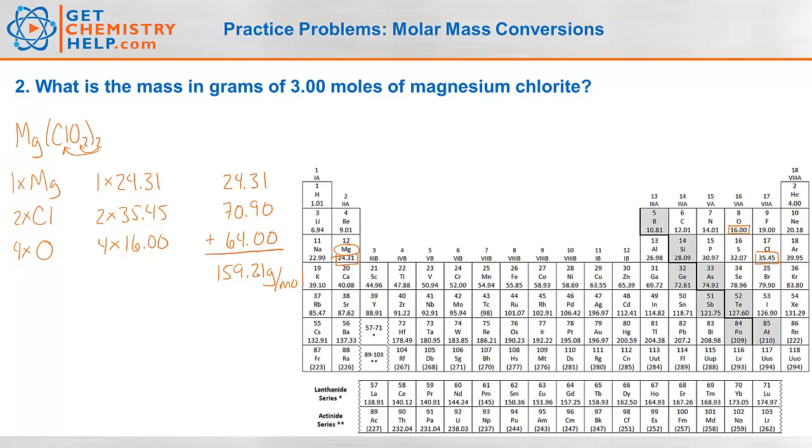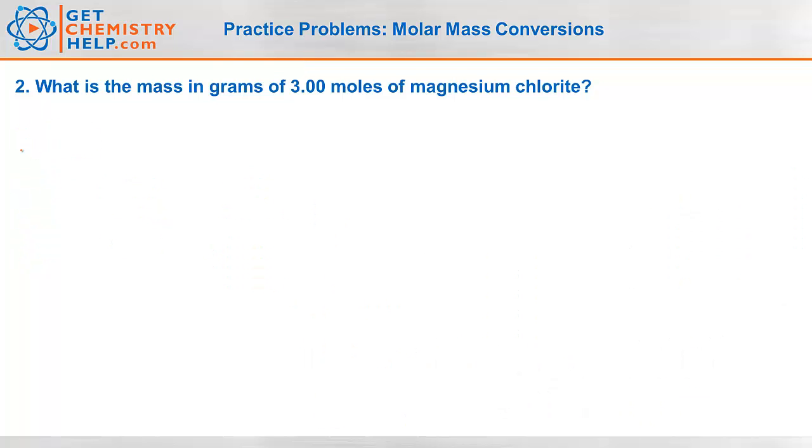So again, this converts between grams and moles, which is what I want. I want to go from moles into grams. So we can use that, so 3.00 moles of magnesium chlorite. And the conversion factor we just solved for is the molar mass, so 159.21 grams per mole of magnesium chlorite. So moles will cancel.